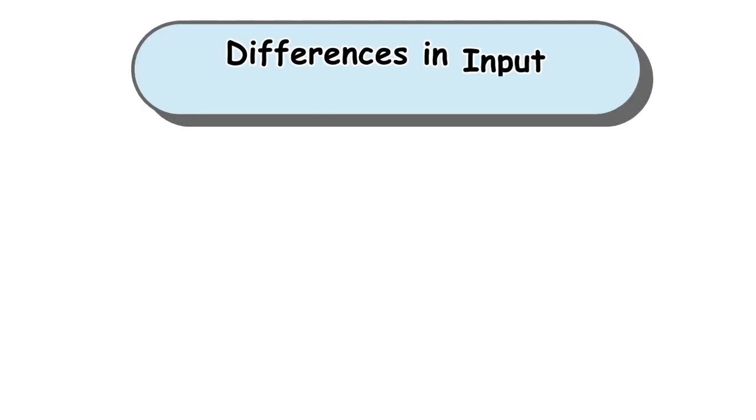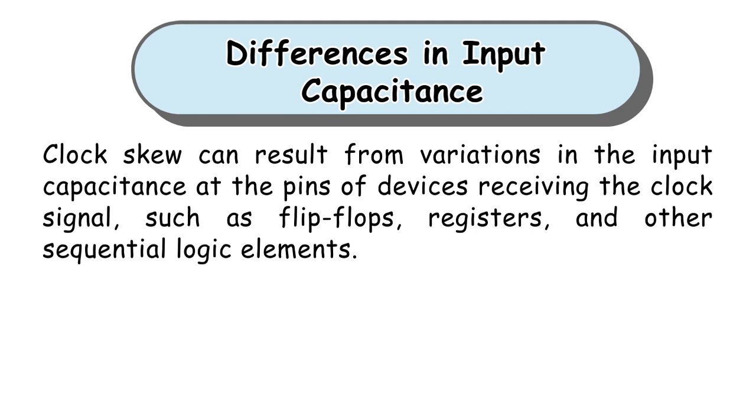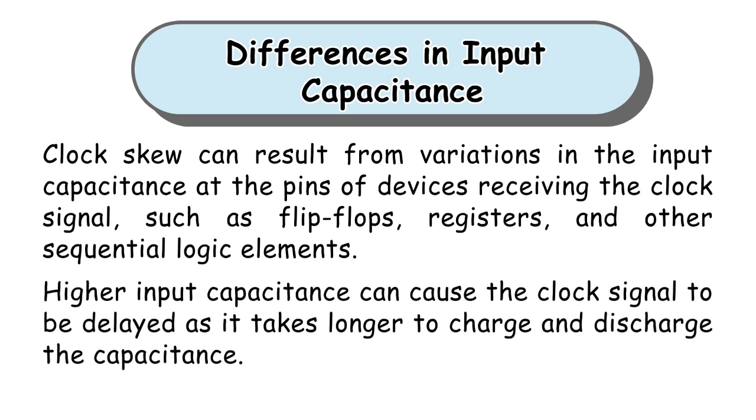Another reason is differences in input capacitance. Clock skew can result from variations in the input capacitance at the pins of devices receiving the clock signal, such as flip-flops, registers, and other sequential logic elements. Higher input capacitance can cause the clock signal to be delayed as it takes longer to charge and discharge the capacitance.